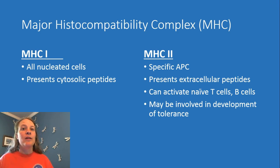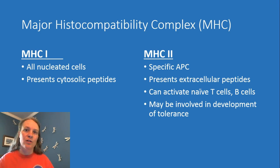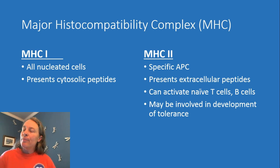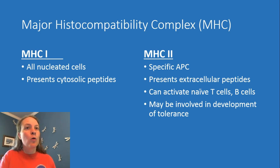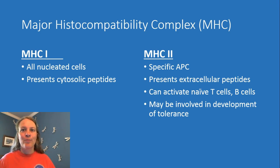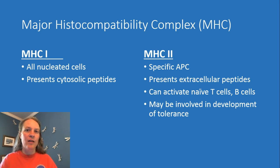If you recall, the molecule involved with presenting the antigen is called major histocompatibility complex. There are two types of this. One type is found on all nucleated cells — so basically everything except red blood cells — and this just helps us to say, okay, this is our own cell. If a cell has, for example, been infected by a virus, it can present certain peptides that will initiate its own death and so forth. So it's kind of checking in on how that cell is doing.